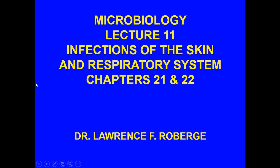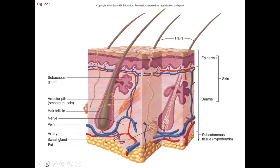We're going to cover the skin system first. Of course, this is the largest organ of the entire body. The functions for skin include controlling body temperature, prevention of loss of fluid, the synthesis of vitamin D, as well as providing sensory information of the environment — hot, cold, painful stimuli. We also have immune functions in the skin.